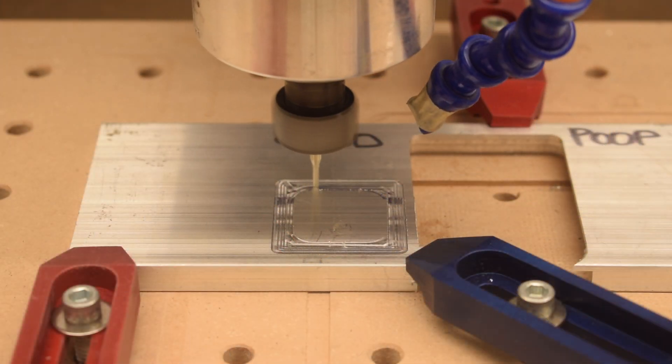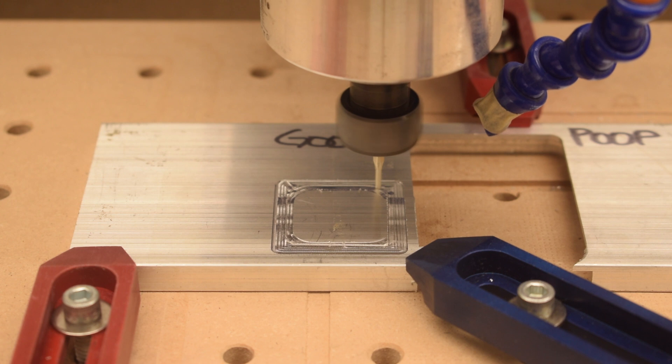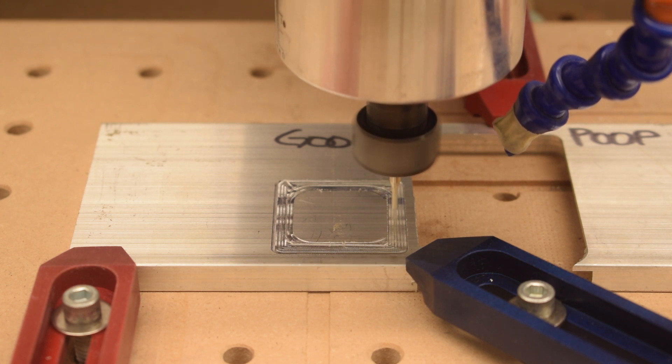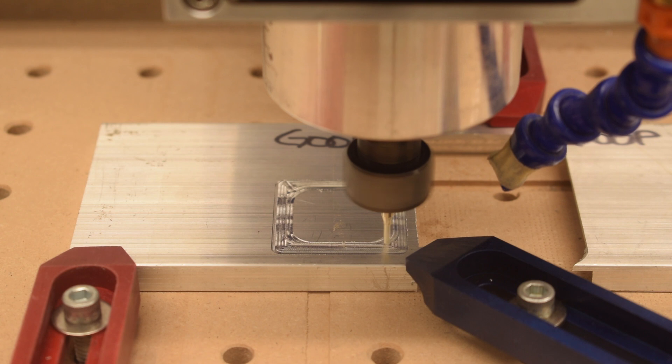I'm going to run the same toolpath on both sides of my aluminum using a 2mm single flute end mill. Single flutes are extremely clog resistant, so this cutter should do alright in these tests.